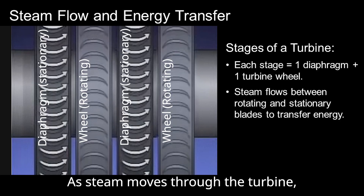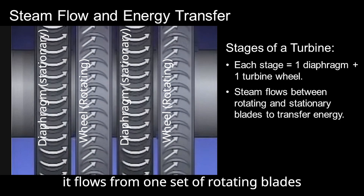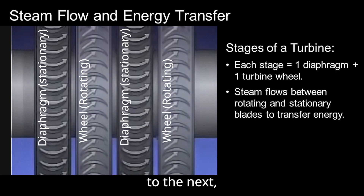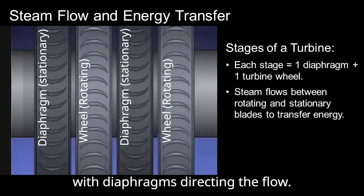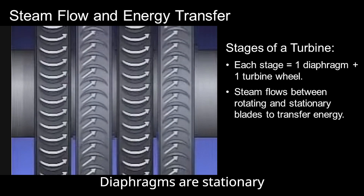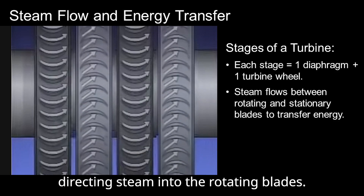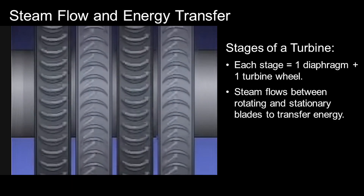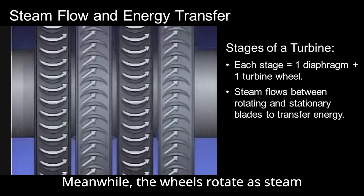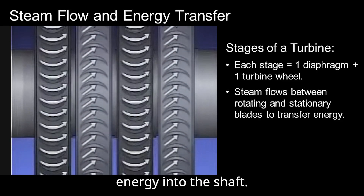As steam moves through the turbine, it flows from one set of rotating blades to the next, with diaphragms directing the flow. Diaphragms are stationary and act as guides, directing steam into the rotating blades. Meanwhile, the wheels rotate as steam strikes the blades, transferring energy into the shaft.